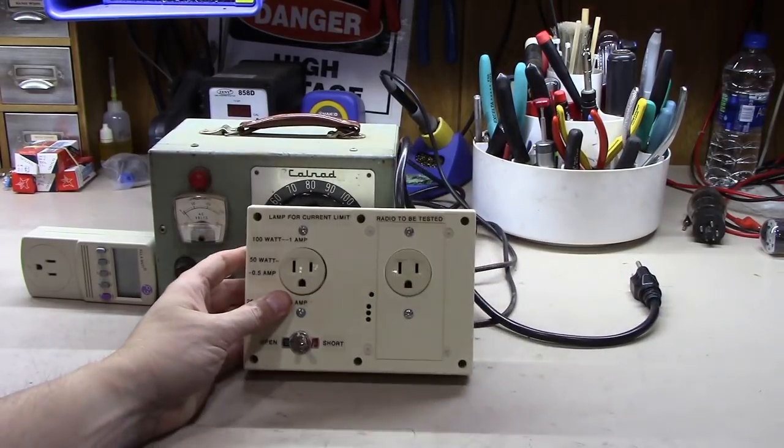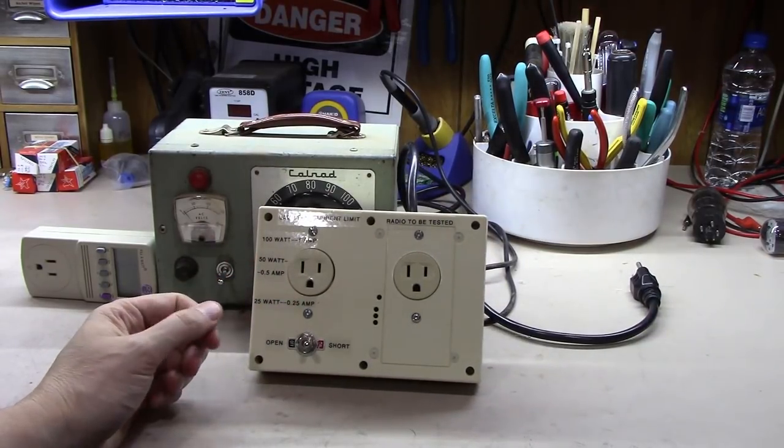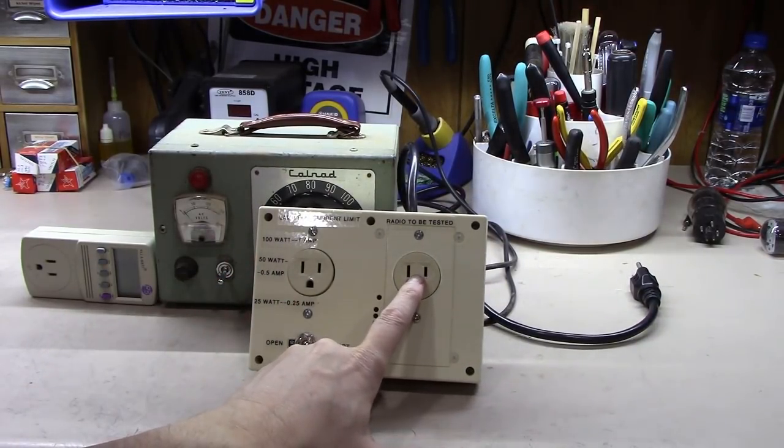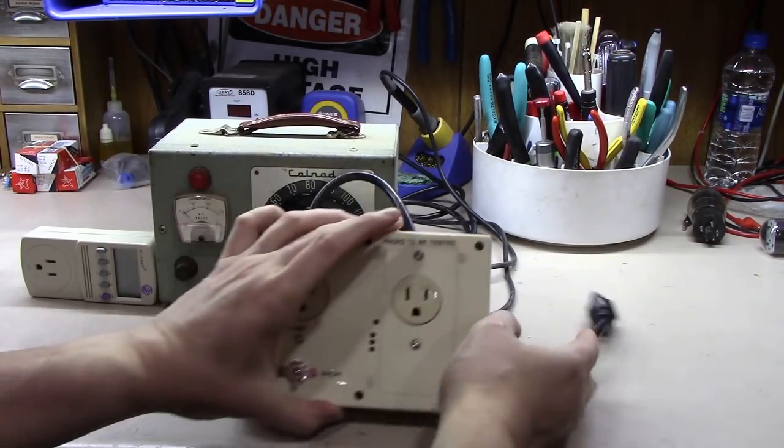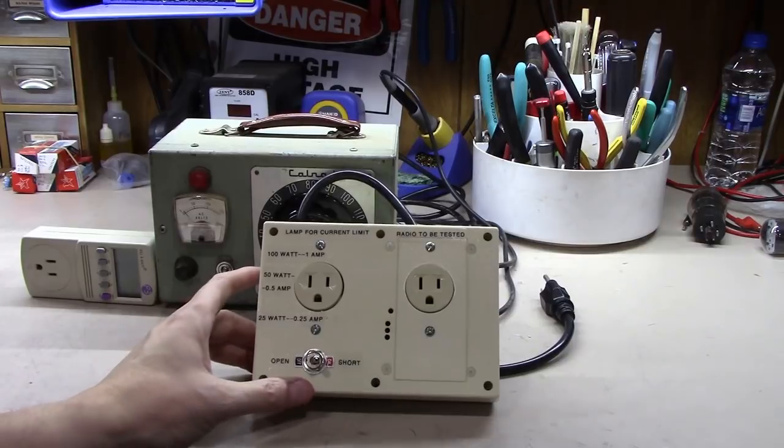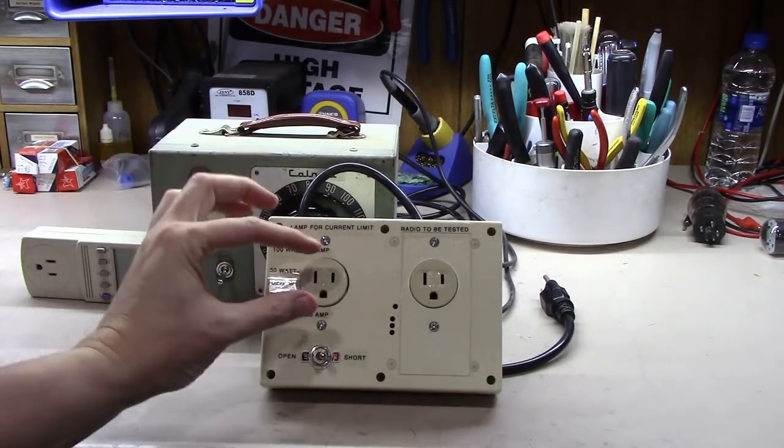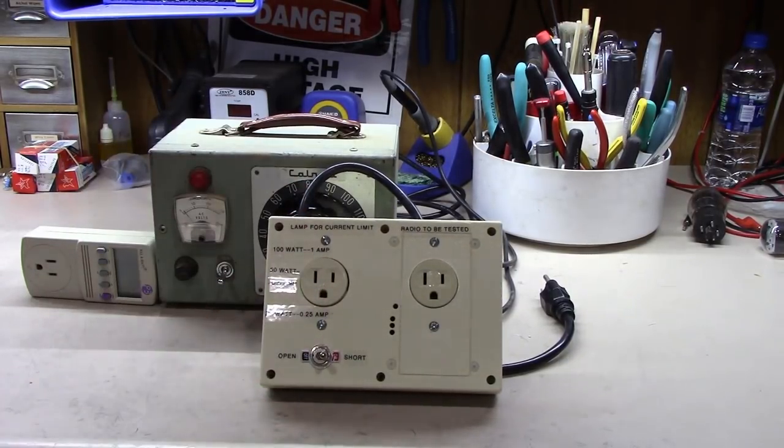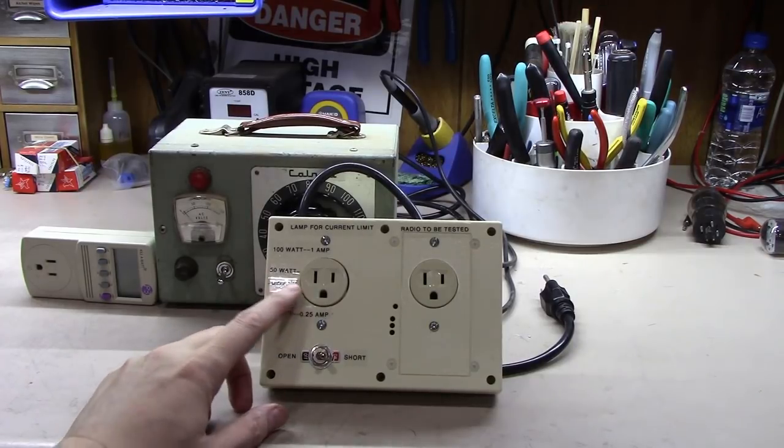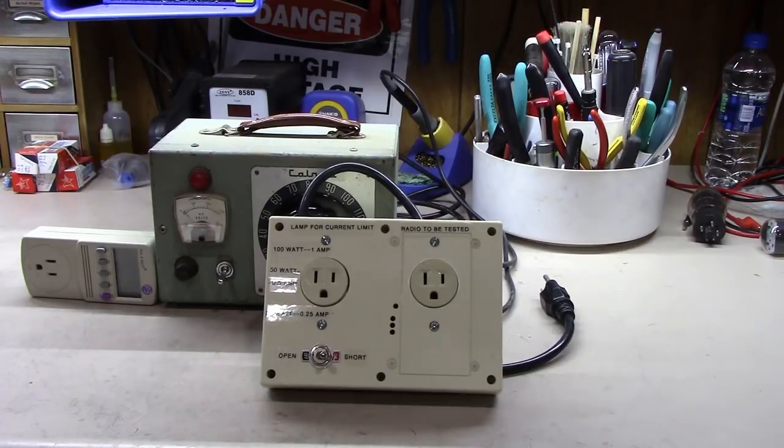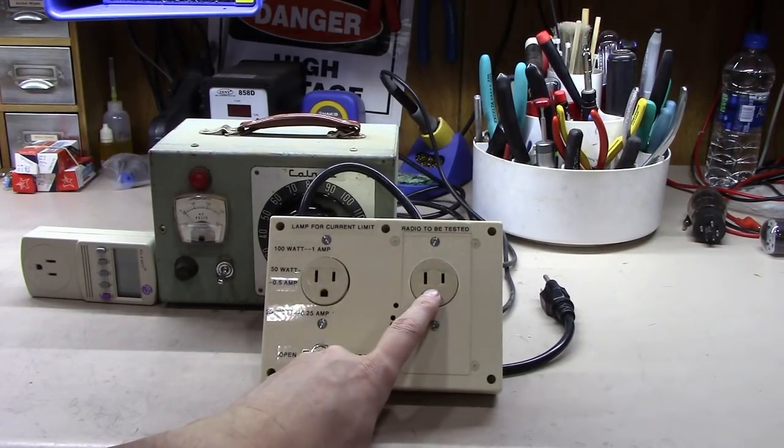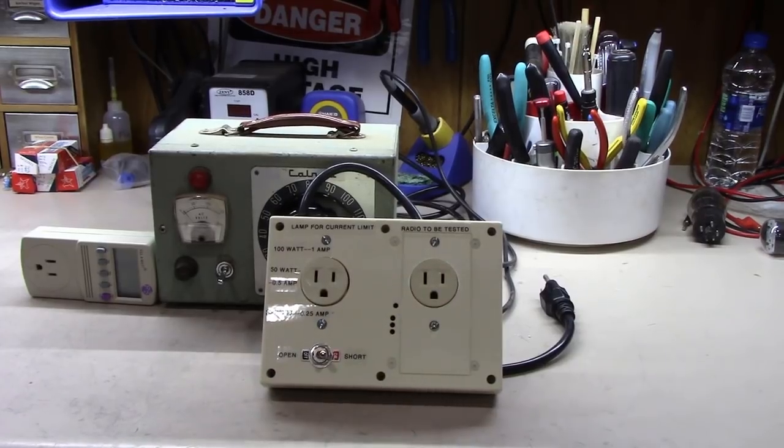This is another unit. This is a dim bulb tester. You plug in the radio you want to test into one end, plug the other end into your wall, and then what goes right here is a lamp. You put a light bulb into it. It'll tell you for 50 watts, use a half amp. For 100 watts, use a 100-watt bulb, so on and so forth.